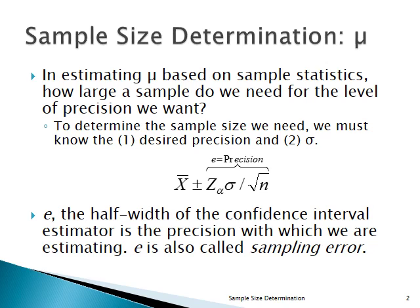When we're making inferences about μ, we're using the sample mean, x bar, as a point estimator of μ. The sample size is n, but how large should n be?